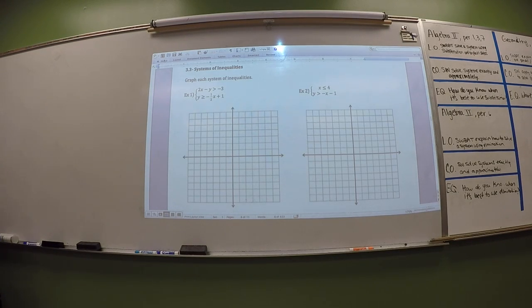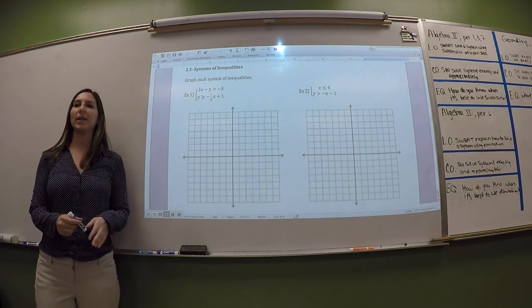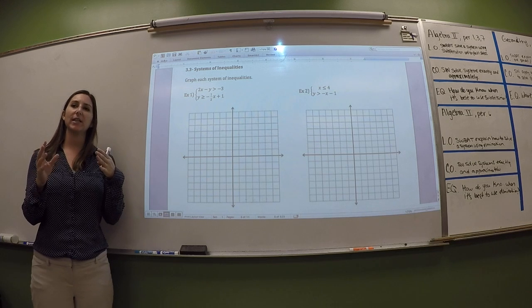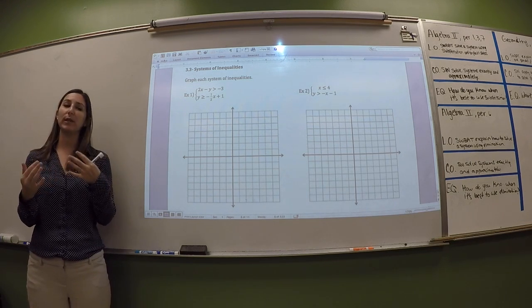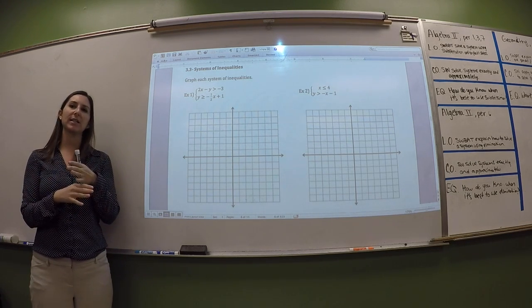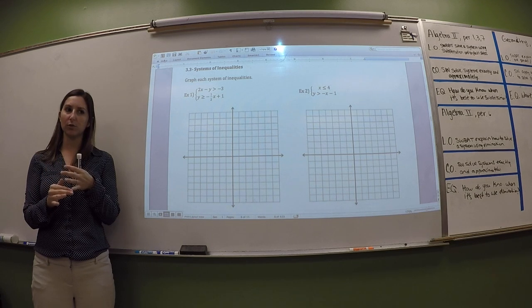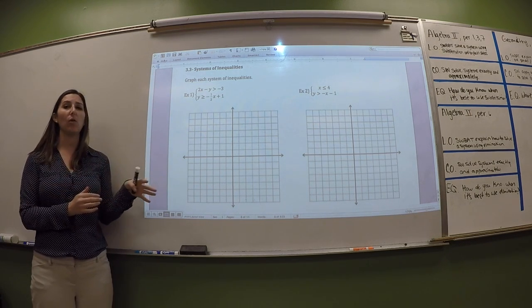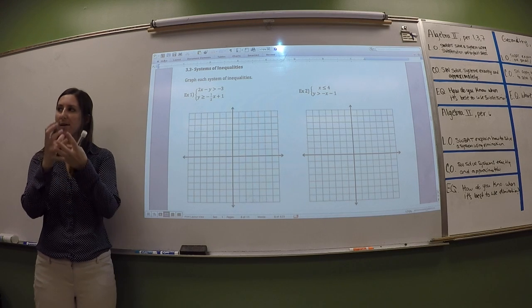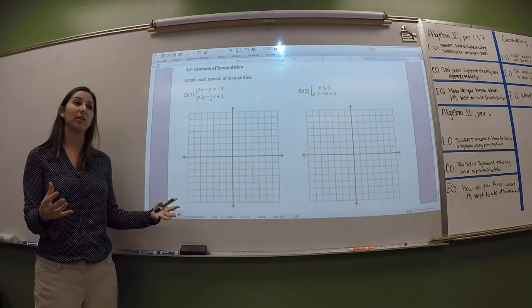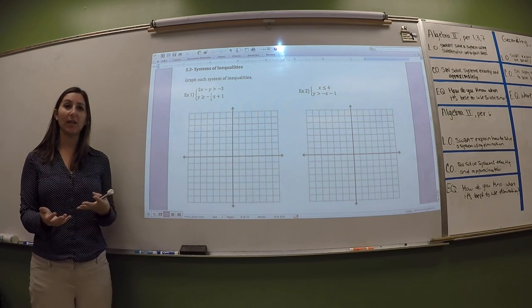The difference between 3-3 and 3-1 is with 3-1 you were finding, you graphed your two equations and then they intersected at one point and that was your one solution. Here we're going to do inequalities. So your solution isn't one answer, it's like a region. So it's going to be an area, a shaded area.